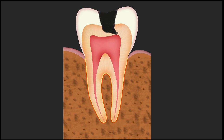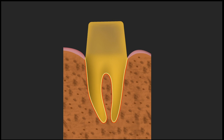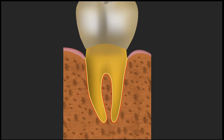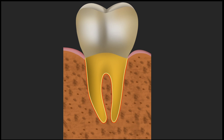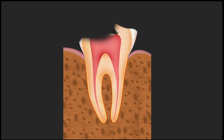Before going into the details of how to make an endocrown, let's assume certain clinical situations. If a patient comes with pulpal inflammation, we ideally go for root canal treatment. After root canal treatment, we prepare the tooth and give a full coverage restoration. It will stay there with no problems because there is adequate tooth structure remaining.